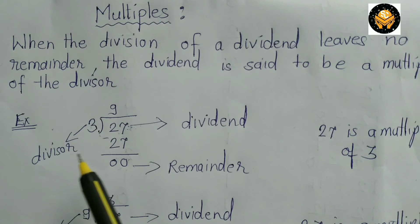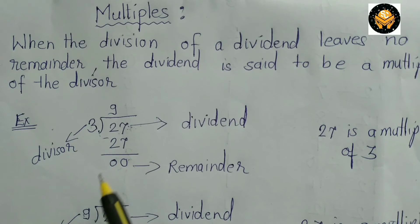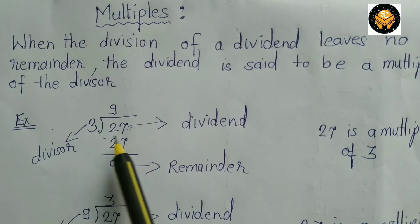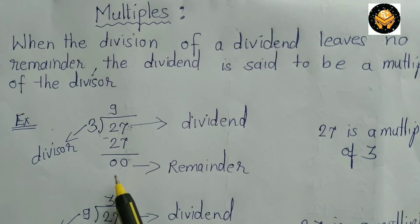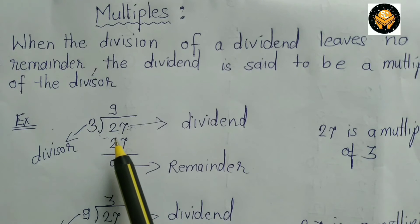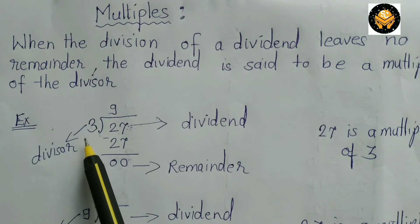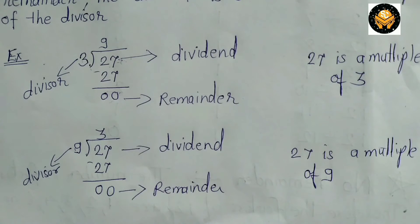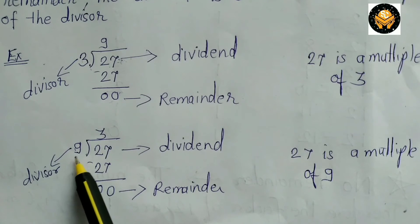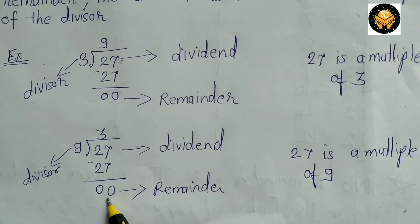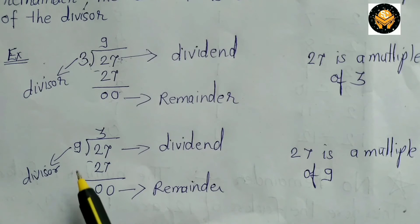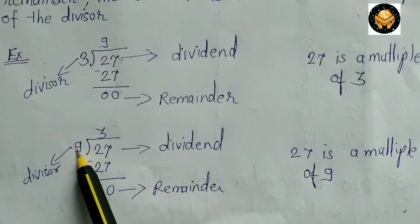Let's take one example. After dividing 27 by 3, we get remainder 0, which means 27 is a multiple of 3. Take one more example: if you divide 27 by 9, again you will get remainder 0. It means 27 is a multiple of 9.